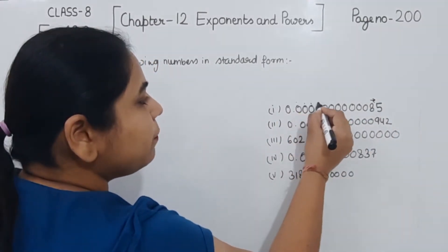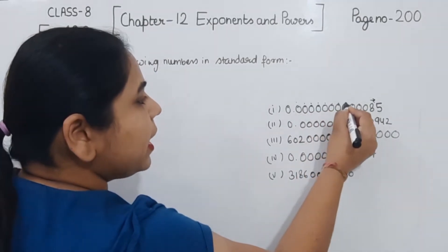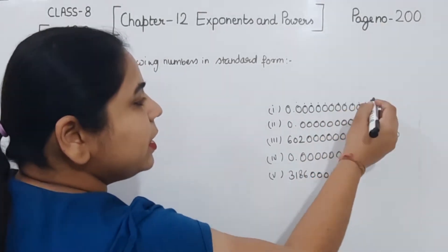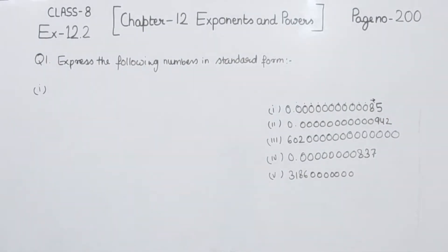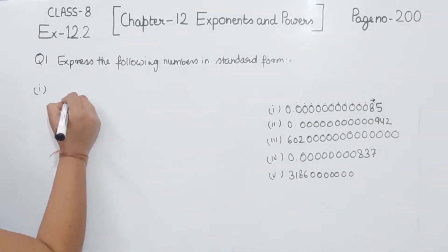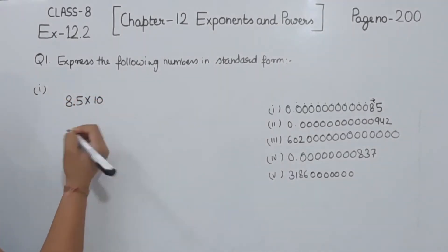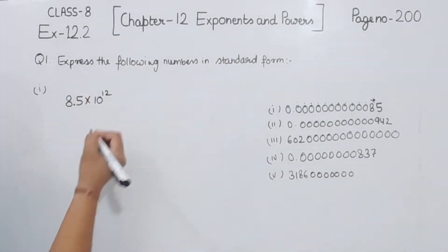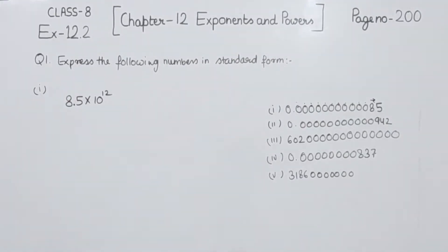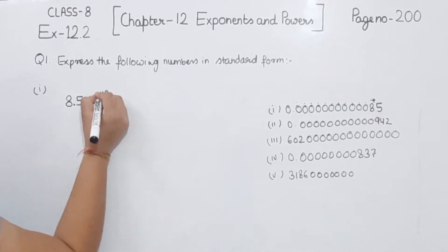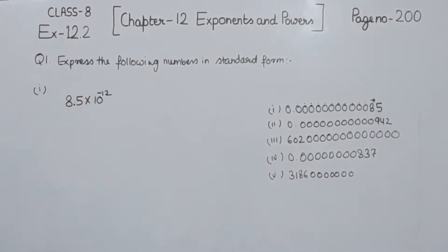Counting the places: 1, 2, 3, 4, 5, 6, 7, 8, 9, 10, 11, and this one we are having is 12. So I am going to write this one as 8.5 multiplied by 10 to the power minus 12. So this is the standard form for part 1.